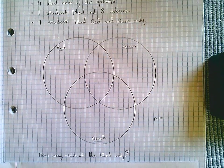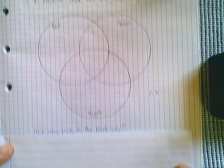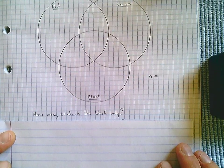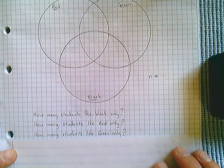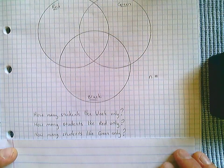The questions ask, once we've got the Venn diagram: how many students like black only, how many students like red only, and how many students like green only?